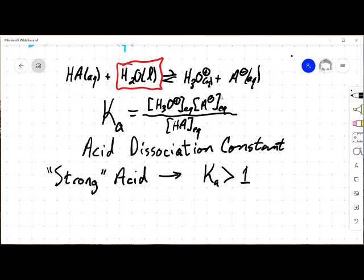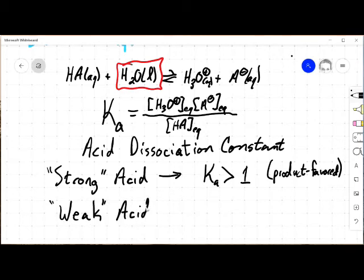Which just means that this is product favored. A weak acid has Ka less than 1. It's reactant favored.